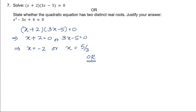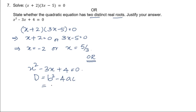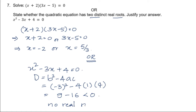In the optional question, we need to check whether two distinct real roots exist or not. The given equation is x² − 3x + 4 = 0. Let me find the value of the discriminant. The discriminant is b² − 4ac. Here b² = (−3)² = 9, minus 4 times a = 1 times c = 4, giving 9 − 16, which is less than 0. This means no real roots exist — they can also be called imaginary roots.